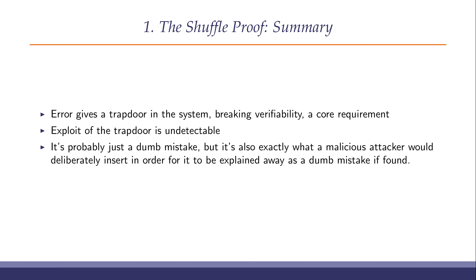In summary, this error is really a trapdoor into the shuffle proof. It completely breaks verifiability, which was a core requirement specified by the chancellery for the level of certification this system was trying to achieve. Exploit of the trapdoor is undetectable — the cheating proof transcripts are computationally indistinguishable from the valid proof transcripts. It's probably just a dumb mistake, something that somebody reading a paper they didn't fully understand implemented incorrectly. On the other hand, it's exactly what a malicious attacker who knew exactly what they were doing would do in order to be able to explain it away as a dumb mistake afterwards.